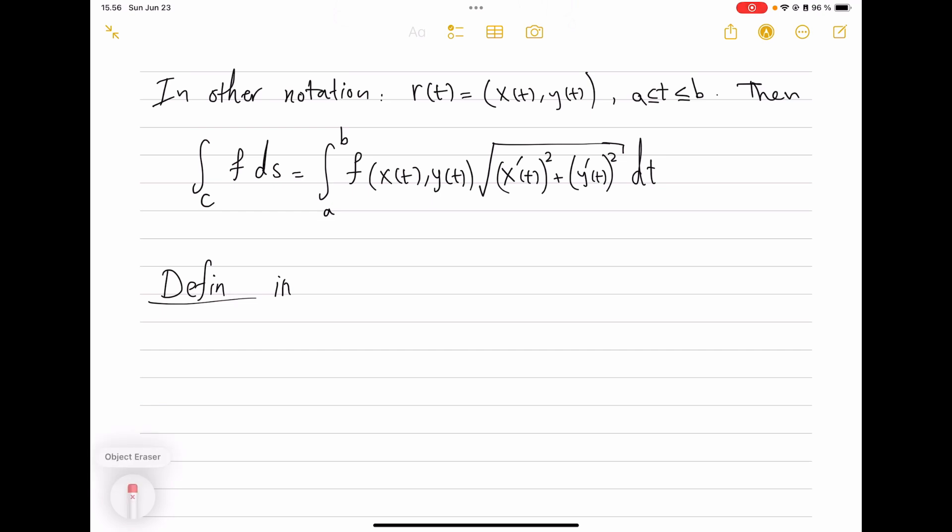That means f evaluated at x(t), y(t). And now r'(t) is (x'(t), y'(t)), and its length is √[x'(t)² + y'(t)²]dt. So this is not a new formula—it's just new notation. Previously, instead of all of this, we had |r'(t)| and that's just that. But there is another benefit to this notation: it helps us define some new integrals.